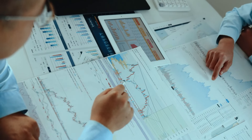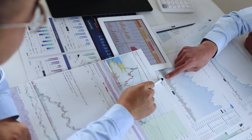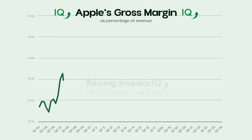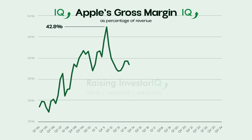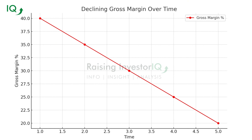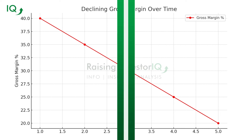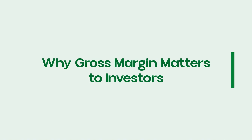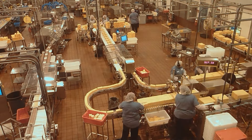This figure is critical before accounting for additional expenses like operating costs, salaries, and taxes. A high gross margin typically indicates that a company is efficiently managing its direct costs and can keep a large portion of its sales revenue. Companies with strong gross margins are often in a better position to reinvest in growth, distribute dividends, or withstand downturns. Conversely, a low gross margin may be a red flag signaling inefficiencies or a weak pricing strategy.